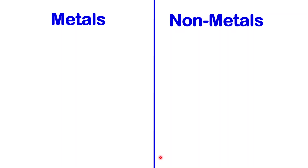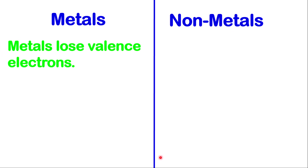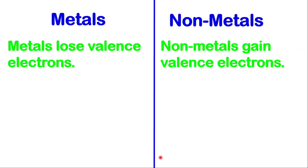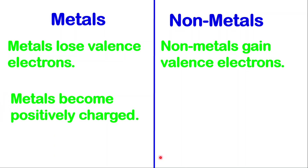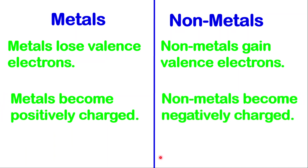In terms of metals and nonmetals forming ions, metals will lose valence electrons while nonmetals will gain valence electrons. Metals will become positively charged while nonmetals will become negatively charged. When metals form ions, those ions are called cations, while when nonmetals form ions, those ions are called anions.